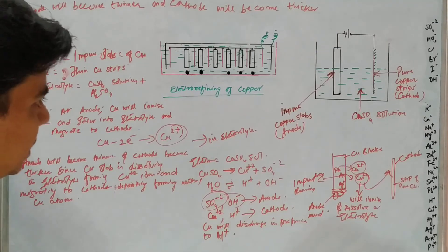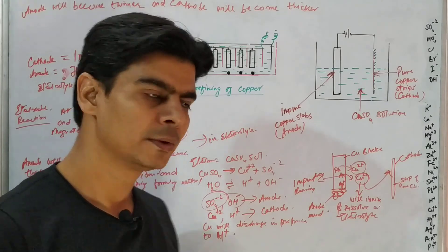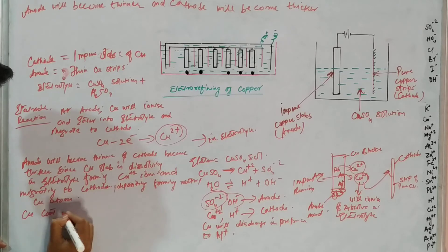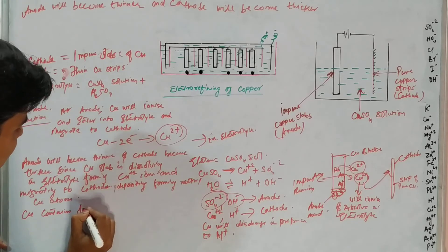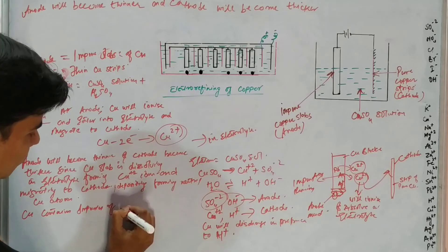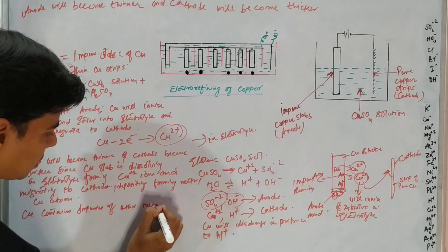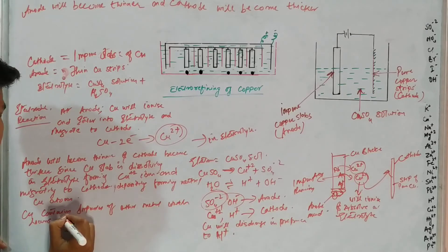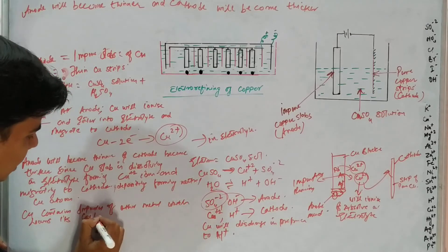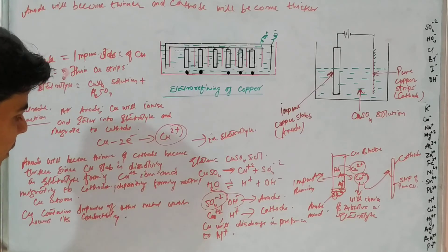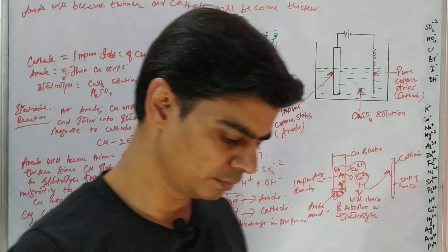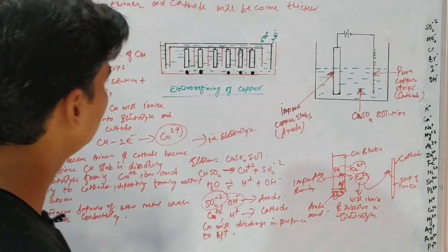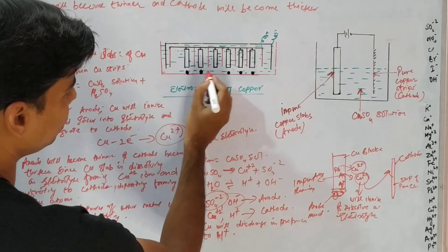The reason we do electro refining of copper is that copper contains impurities of other metals, which lowers its electrical conductivity. To increase the conductivity, we remove these metallic impurities. Some of the metallic impurities shown in black near the anode are known as anode mud.